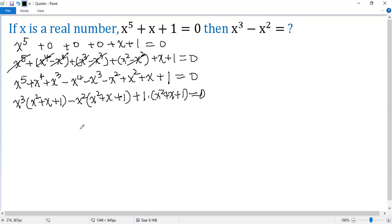So you see, x squared plus x plus 1 is a common factor. Take it out. So we get x squared plus x plus 1. And then the first term becomes x cubed. The second term minus x squared. The last term plus 1 equals 0.